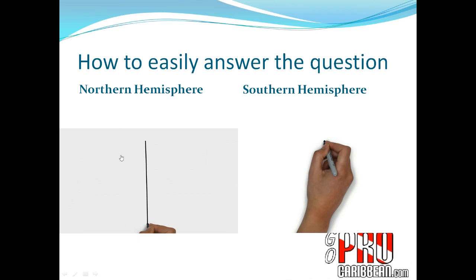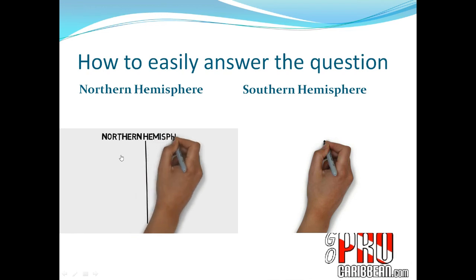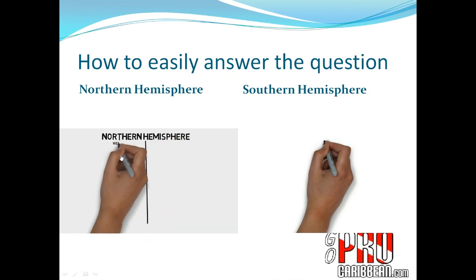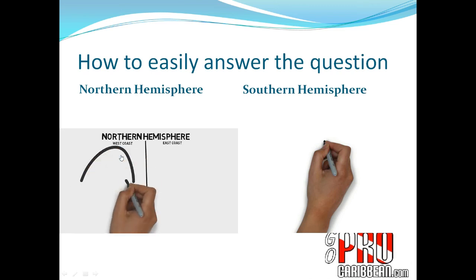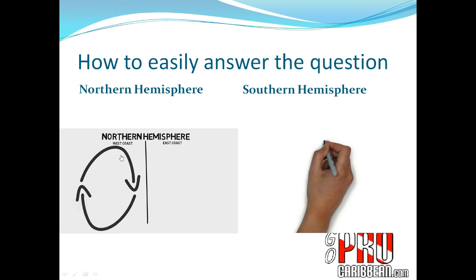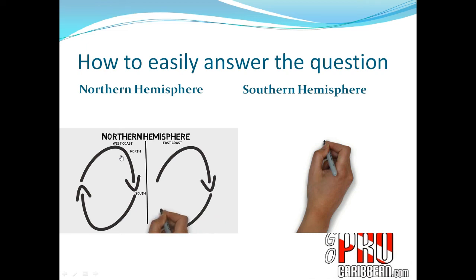To answer a currents question in the exam, here's the doodle to draw. If the question is about a northern hemisphere continent, draw a line where the left represents the west coast and the right represents the east coast. Draw a clockwise circle because you're in the northern hemisphere. You can then clearly see that on the west coast the arrow points from north to south, and on the east coast the arrows show currents running from south towards the north.